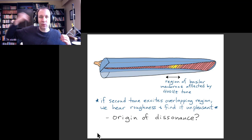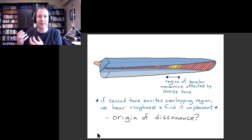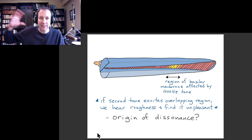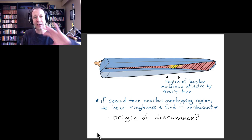If we send one tone to one ear and the other tone to the other ear, that roughness disappears — so we know it's really a phenomenon of sending both tones with close enough frequencies into the same ear. This roughness or unpleasantness when you have two pure tones close together is an origin for some of the dissonance we understand in music.